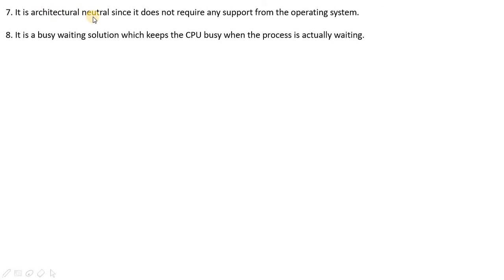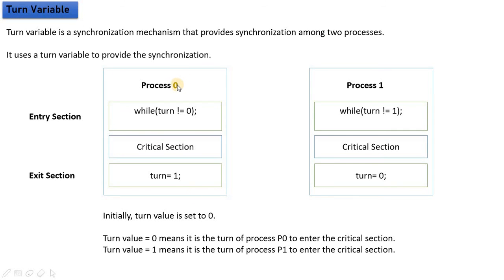It is a busy waiting solution, which keeps the CPU busy when the process is actually waiting. When Process 0 is executing the critical section and Process 1 is waiting, Process 1 continuously executes the while loop.